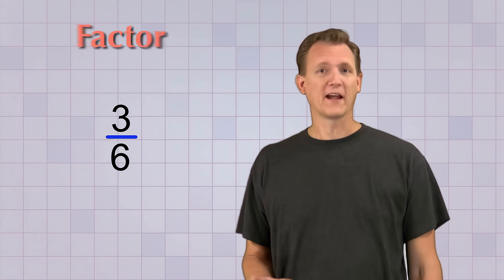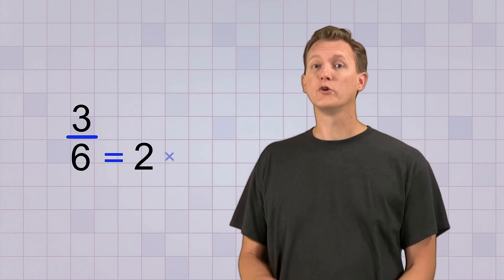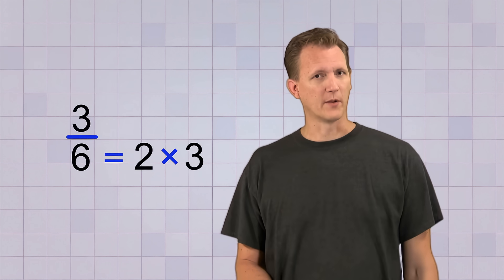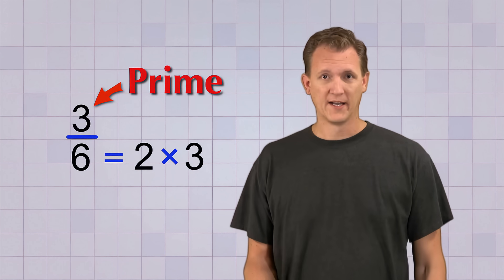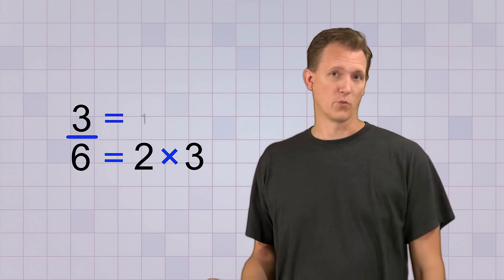Let's take our complicated fraction, 3 over 6, and factor both the top and bottom numbers. Now the bottom number, 6, can be factored into 2 times 3. The top number, 3, is a prime number. Its only factors are 1 and itself. So we can write that as 1 times 3.